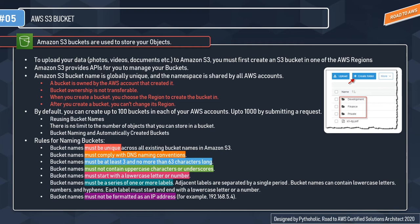Here are the key bucket naming rules: bucket names must be unique across all existing bucket names in Amazon S3; bucket names must comply with DNS naming conventions; bucket names must not contain uppercase characters or underscores; bucket names must start with a lowercase letter or number; bucket names must be a series of one or more labels, with adjacent labels separated by a single period; bucket names can contain lowercase characters, numbers, and hyphens, with each label starting and ending with a lowercase letter or number; and bucket names cannot be formatted as an IP address.